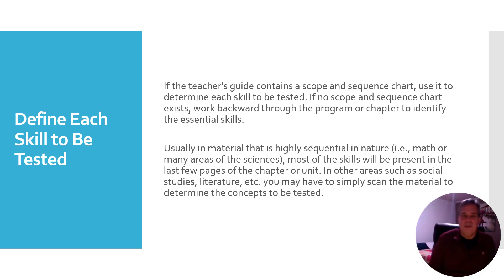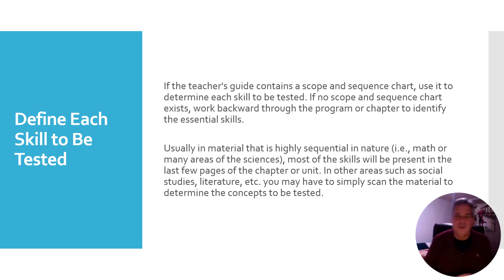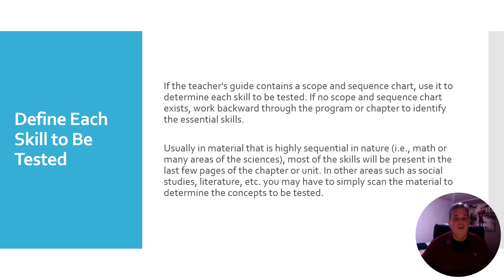In defining the skill to be tested, if you have a teacher's guide with a scope and sequence chart, use that to determine the skill to be tested, such as your SOL scope and sequence in Virginia. If no scope and sequence exists, work backwards through the program to find the essential skills. Usually in material that's highly sequential in nature, most of the skills will be present in the last few pages of the chapter or unit. In other areas such as social studies or literature, you may have to simply scan the material to determine the main concepts to be tested.